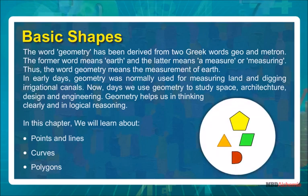The word geometry has been derived from two Greek words: 'geo' and 'matron'. The former word means earth and the latter means a measure or measuring. Thus, the word geometry means the measurement of earth. In early days, geometry was normally used for measuring land and digging irrigational canals.